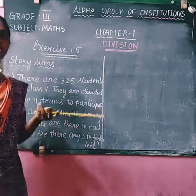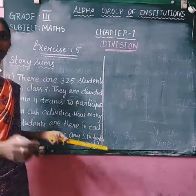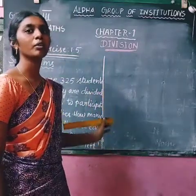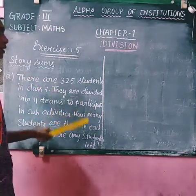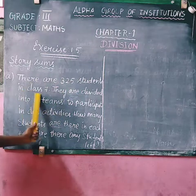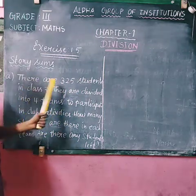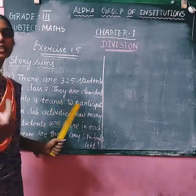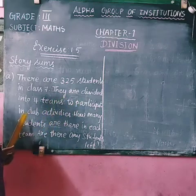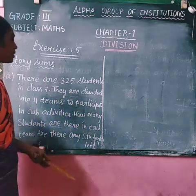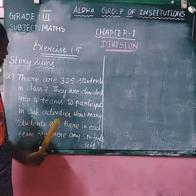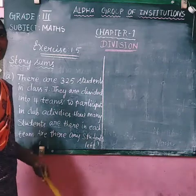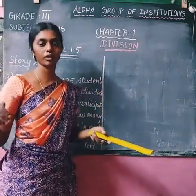Story sums are like short stories where we find values. For example: there are 325 students in class 7. They are divided into 4 teams to participate in club activities. The questions are: how many students are there in each team, and are any students left back after dividing into groups?